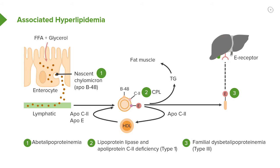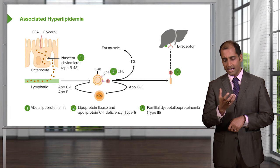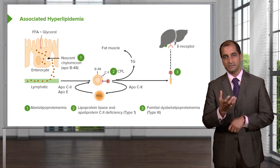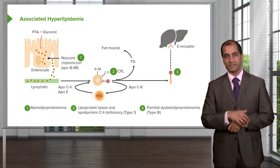What does nascent mean? Baby — think neonatal, neonate. It's a nascent chylomicron. What kind of apolipoprotein do you require? You must memorize ApoB-48 — it's imperative that you know that. So ApoB-48 has now formed a chylomicron. What does the chylomicron have in it? It has triglycerides.